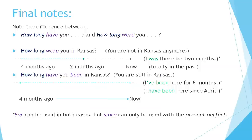Final notes — note the differences between how long were you and how long have you been. How long were you in Kansas? This means you are not in Kansas anymore. For example, I moved to Kansas four months ago, then I moved out two months ago — I was there for two months. This was totally in the past. How long have you been in Kansas? This means you are still in Kansas. I have been here for six months — I am still in Kansas. Or, I have been here since April — four months ago until now, including now. For can be used in both cases, but since can only be used with the present perfect tense.